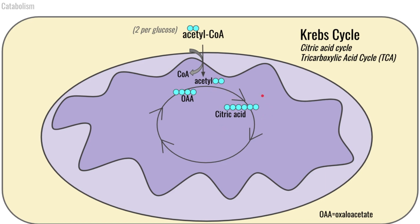Citric acid is a six-carbon compound. We're not going to go through all the details of every single name, but as this citric acid goes through a series of chemical reactions, it's going to get reshuffled in ways that allow us to reduce NAD into NADH. That six-carbon citric acid is going to go through a reshuffling reaction that reduces an NAD to NADH. It's also going to lose a carbon dioxide, generating a five-carbon compound.